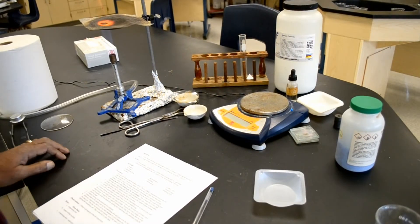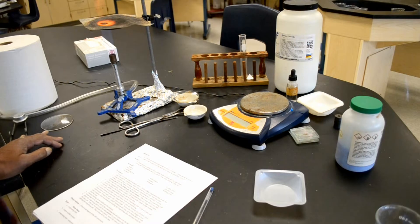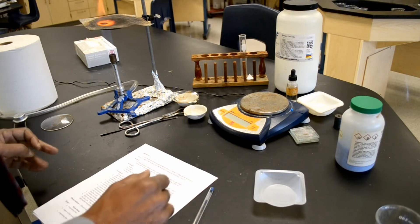Now for the procedure. Set up a hot plate to approximately 300 degrees Celsius. We'll be using a Bunsen burner for this activity, so we won't be using a hot plate. Place a clean evaporating dish on a hot plate or Bunsen burner and heat it for about five minutes to remove any water that may have been absorbed.